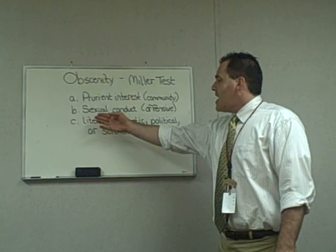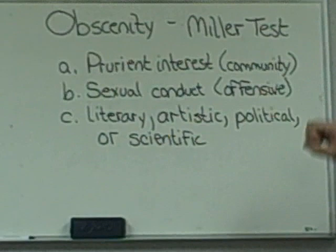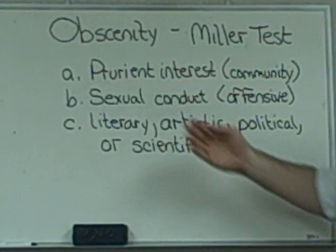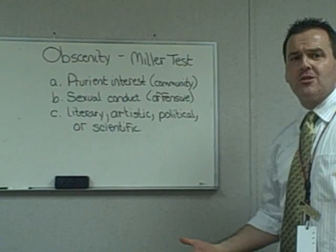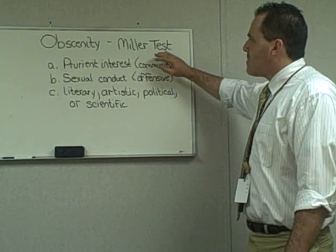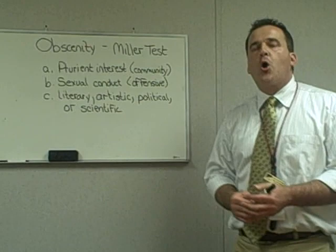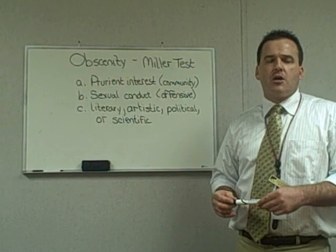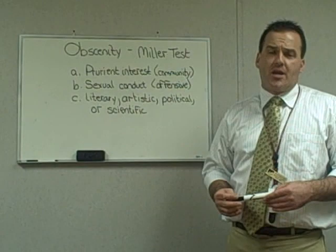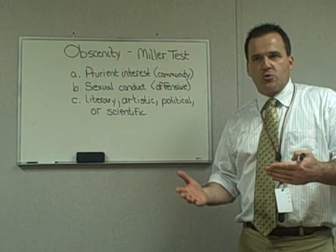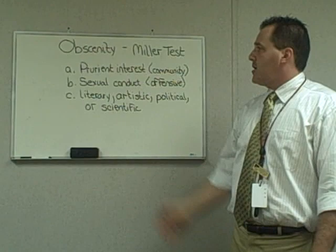The second prong: it must display offensive sexual conduct — and the key word is offensive. What is offensive is going to be determined by community standards. The Miller Test is really allowing local communities to determine, according to their own standards, what should be allowed and what shouldn't. With 50 different states and considerably more cities and counties, communities can cater their standards to what is allowed and, maybe more importantly, what's going to be banned.